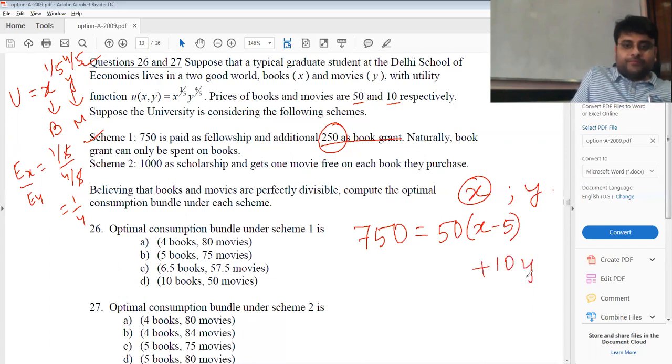Plus 10Y. If I rearrange, I get 1000 equals 50X plus 10Y. I get the same thing.